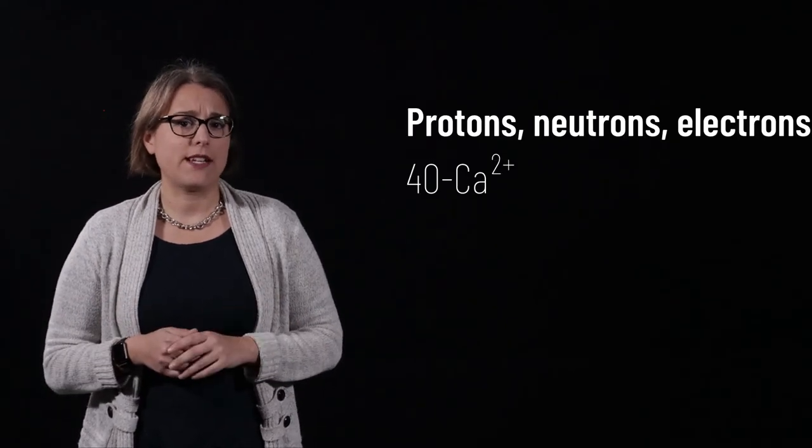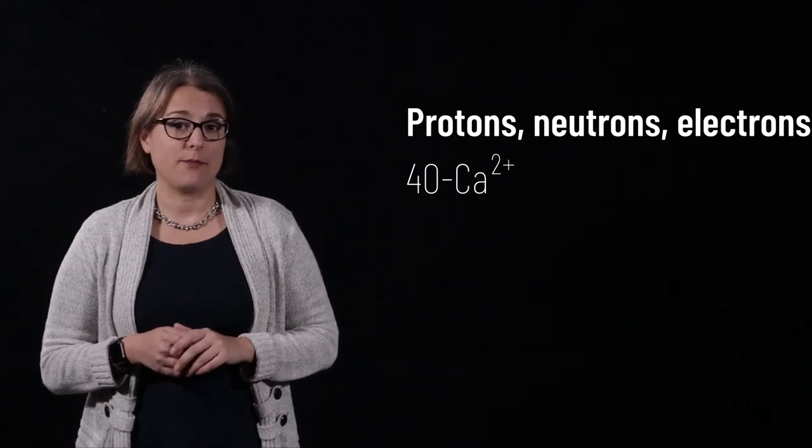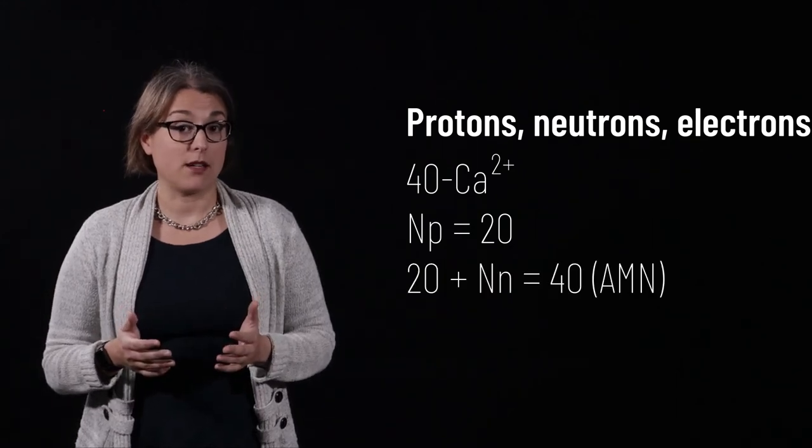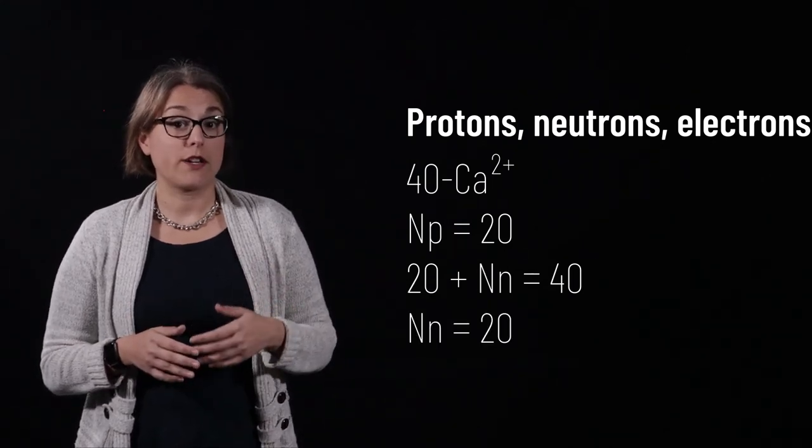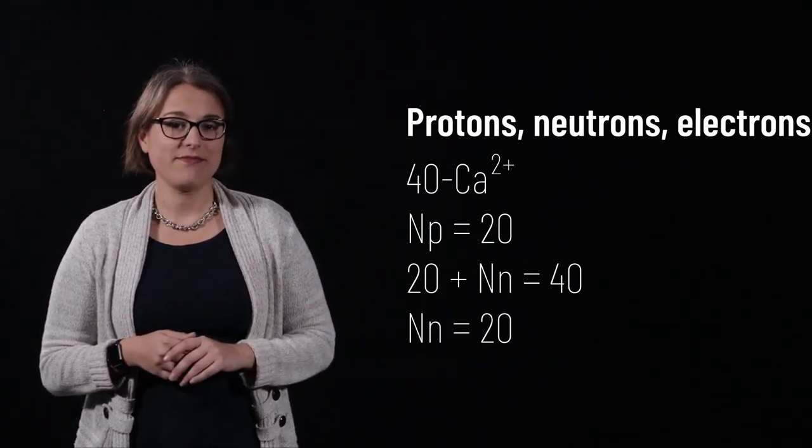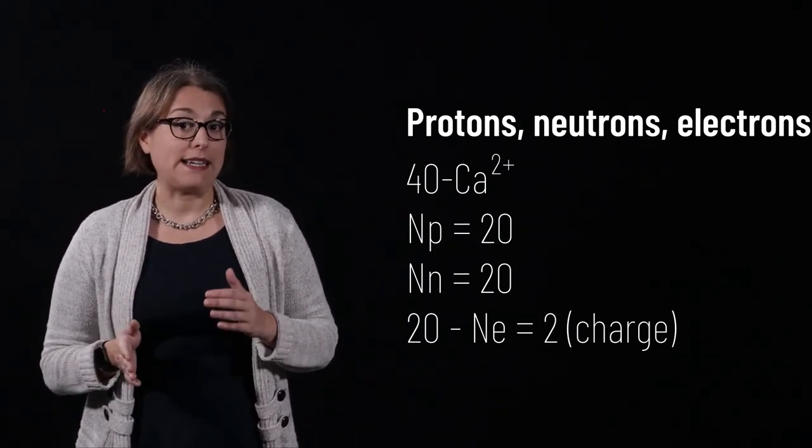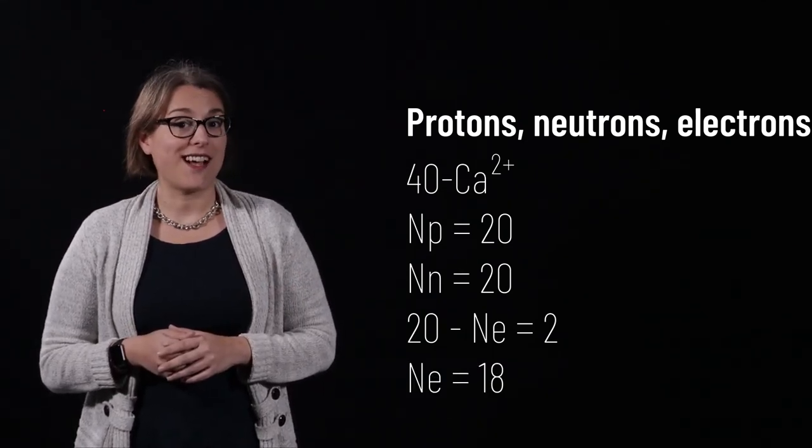Let's look at another example and use it to determine the number of protons, number of neutrons, and number of electrons. Say we have an atom of 40 calcium 2 plus. This element is calcium, so the number of protons is defined by the atomic number. The atomic mass number is 40. 20 protons plus the number of neutrons equals 40, so there are 20 neutrons. Finally, the charge is positive 2. 20 minus the number of electrons equals 2. Therefore, there are 18 electrons in this ion of calcium.